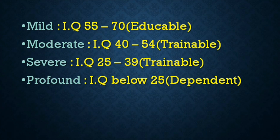In moderate mental retardation, IQ between 40 to 54 — that group is called the trainable group. In severe mental retardation, IQ belongs to 25 to 39, also called trainable group. In profound mental retardation, IQ ranges below 25 — that group is called the dependent group. So the correct answer is IQ 15.